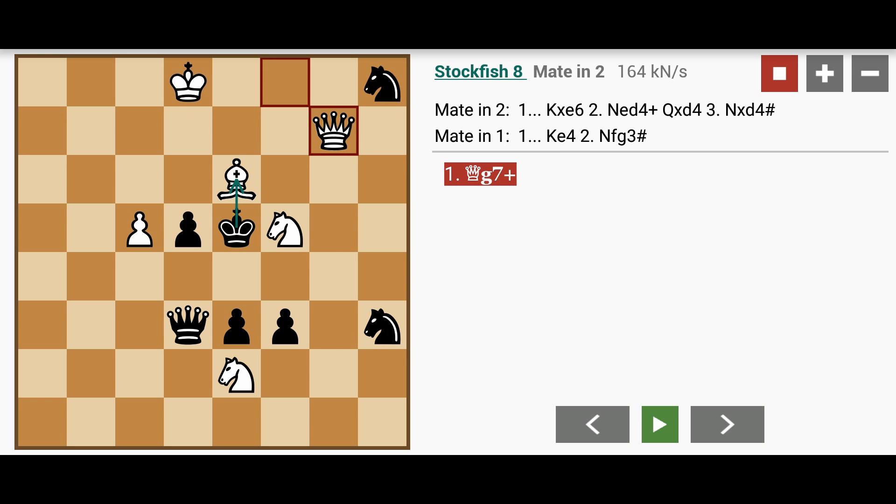Now, black has nowhere to go except to capture the bishop or move back to e4. But if he moves to e4,